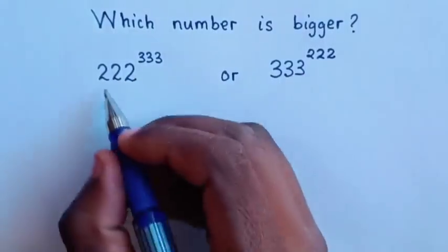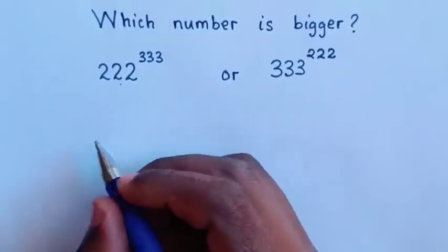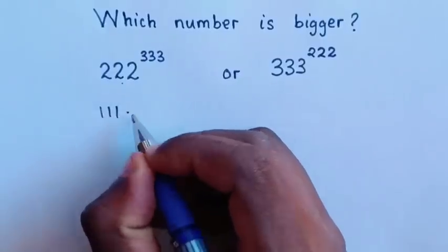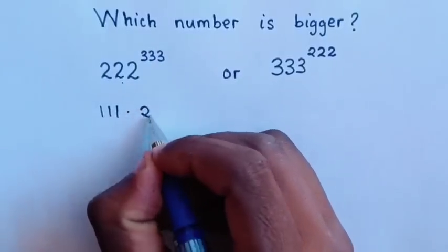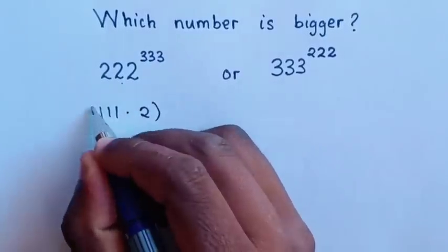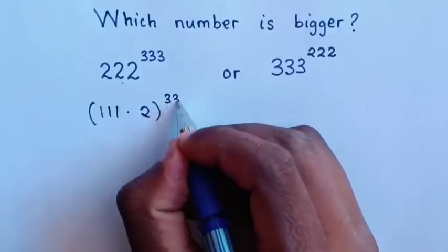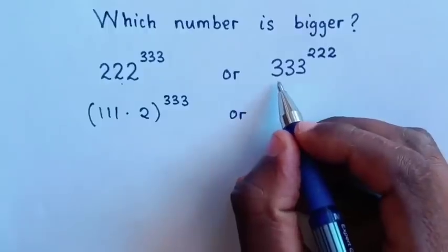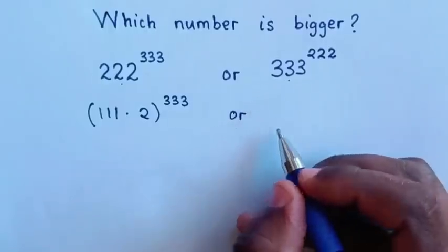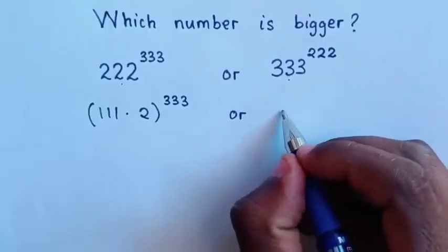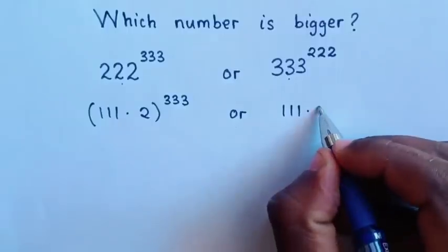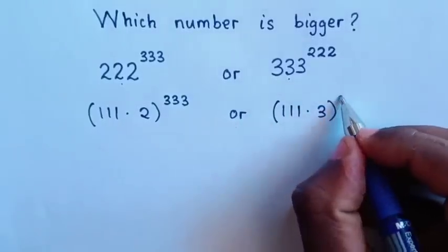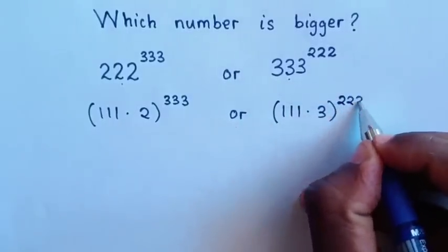So, first, the base 222 is the same as 111 times 2, bracket power of 333. Or, 333 is the same as 111 times 3, bracket power of 222.